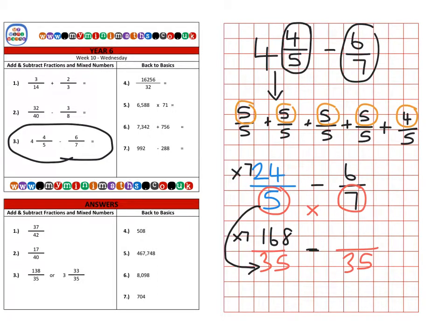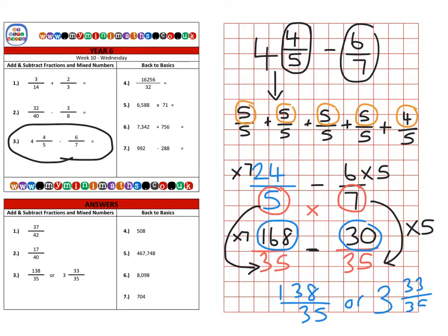We're going to subtract that here. We've converted the 7 into 35, so we've multiplied it by 5, so we do the same with the top, the numerator, so 6 lots of 5, 5 lots of 6 are 30. Then finally we can say, well, 168 thirty-fifths subtract 30 thirty-fifths will give us a final answer of 138 over 35, or we could put it back into a mixed number, which would be 3 and 33 out of 35.